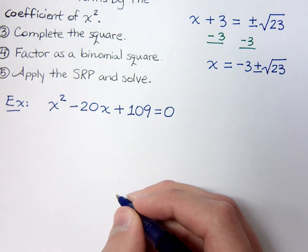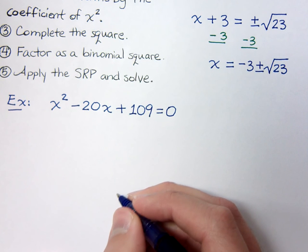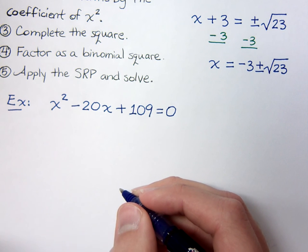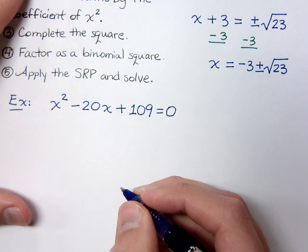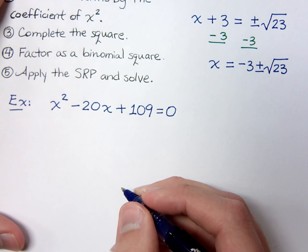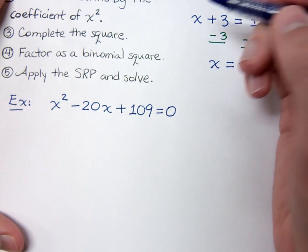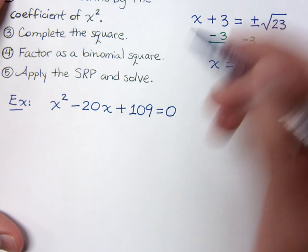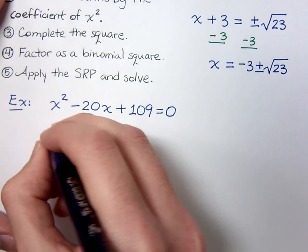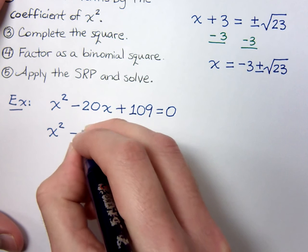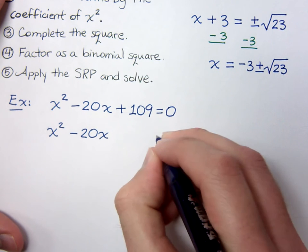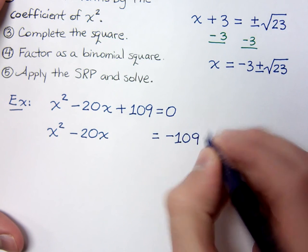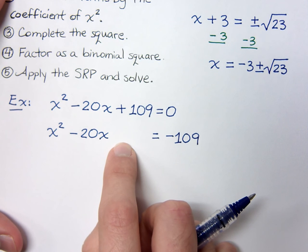One of the first things you always want to try is to see if it's going to factor. This one will not factor, so don't even try. Instead, let's follow the steps for completing the square. Step one is to get all variable terms to one side and the constant to the other, so I need to move the one hundred nine to the other side: x squared minus twenty x equals negative one hundred nine. I'm leaving a gap because I know I'll need to fill it in when I complete the square.